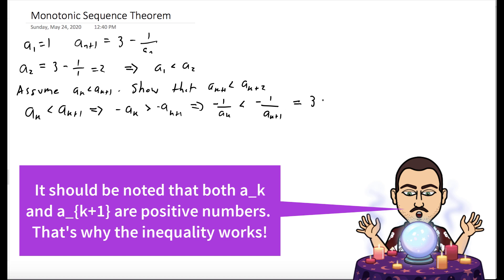And then we could add 3 to both sides. And so we have 3 minus 1 over a_k is less than 3 minus 1 over a_{k+1}. This left-hand term is a_{k+1}, and the right side is a_{k+2}. So we showed that our sequence is increasing.